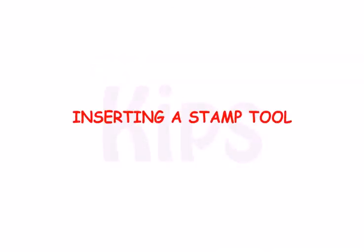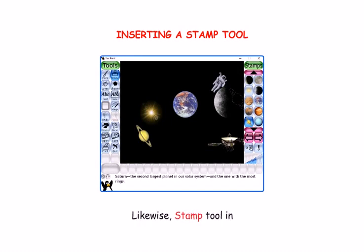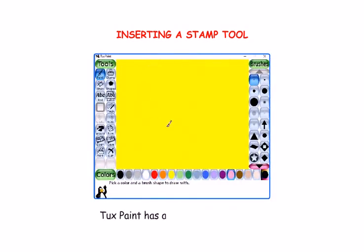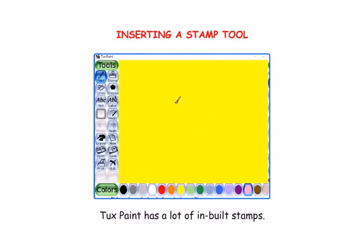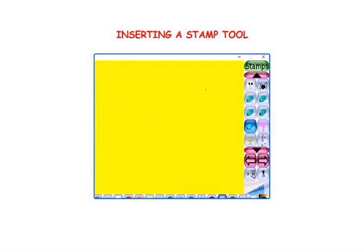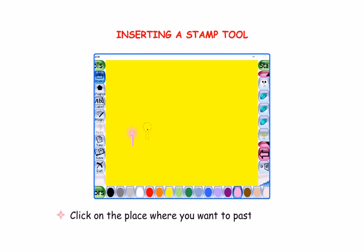Let me tell you how to use the Stamp Tool. A stamp is a sticker that you can paste on a piece of paper. Likewise, Stamp Tool in TuxPaint allows you to paste ready-made pictures on your drawing canvas. TuxPaint has a lot of in-built stamps. Click on the Stamp Tool in the Tools Bar. Select any stamp from the selector. Move the pointer to the canvas and click on the place where you want to paste the stamp.